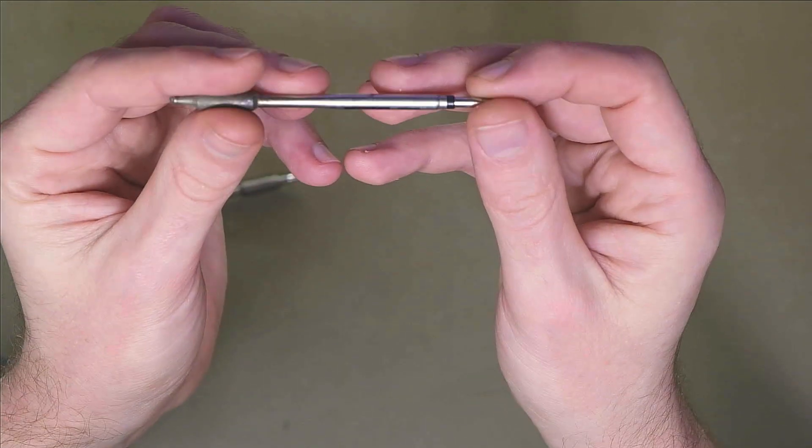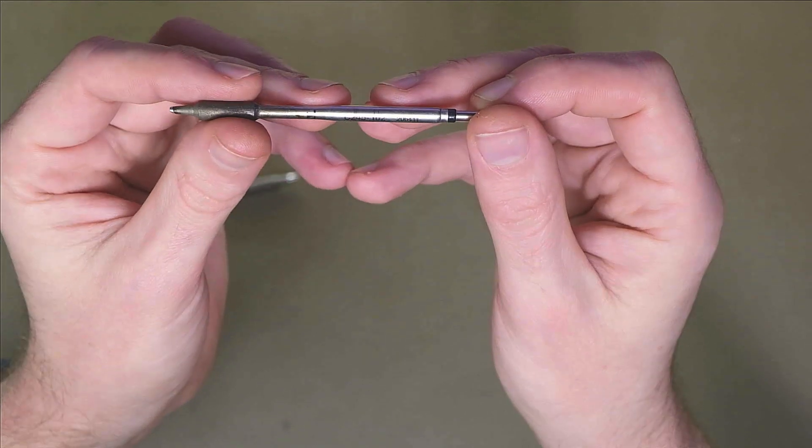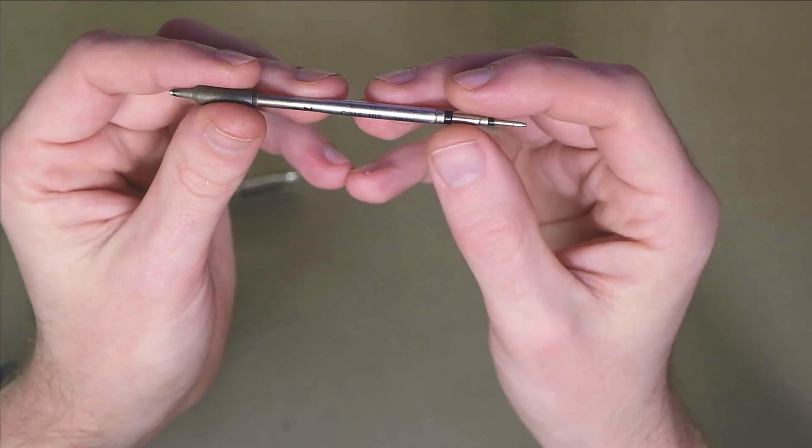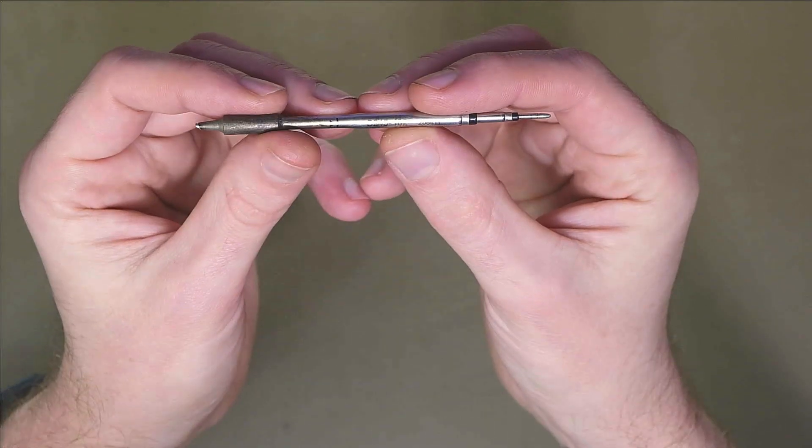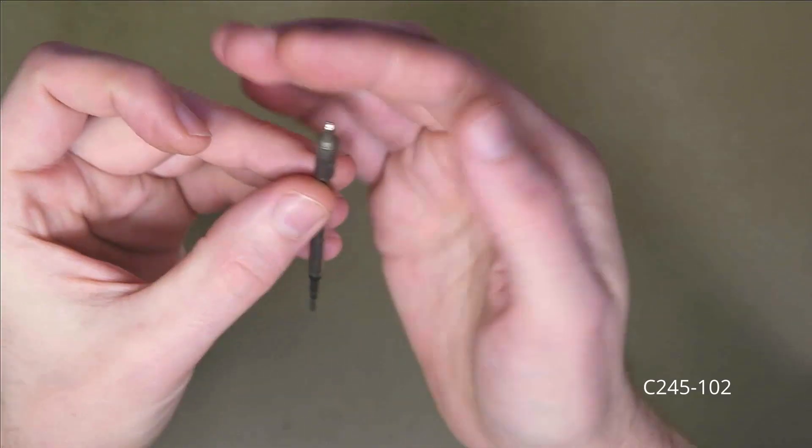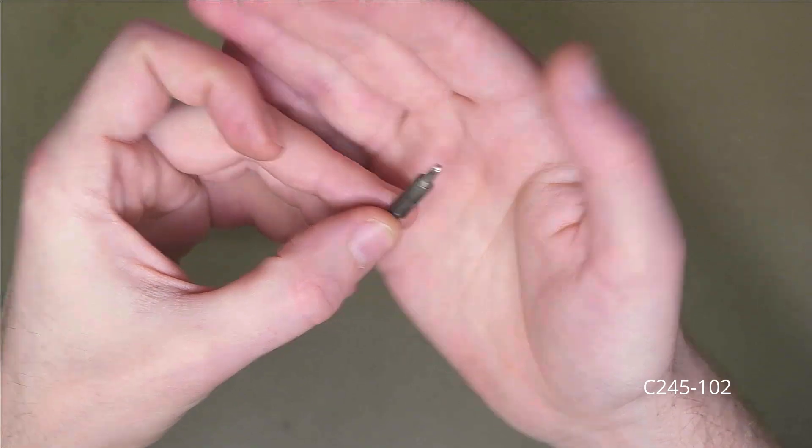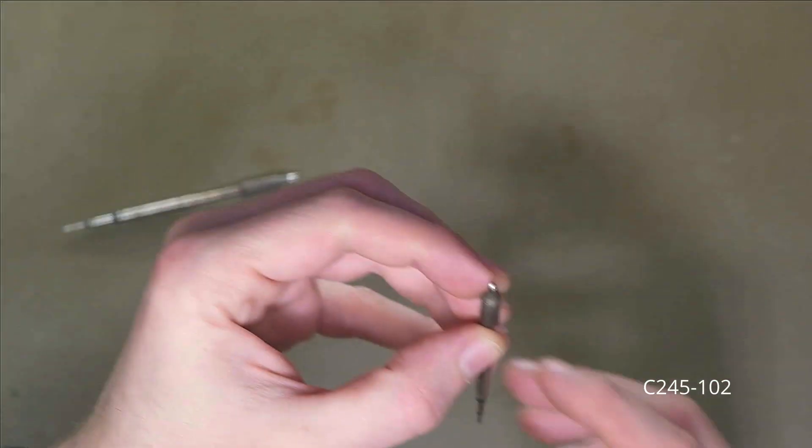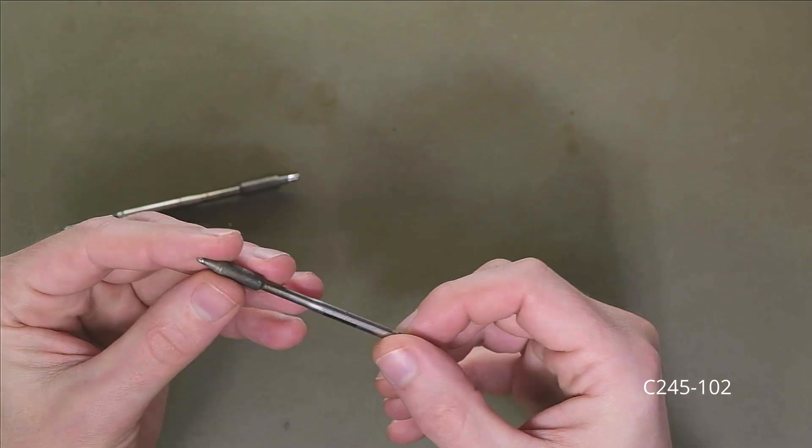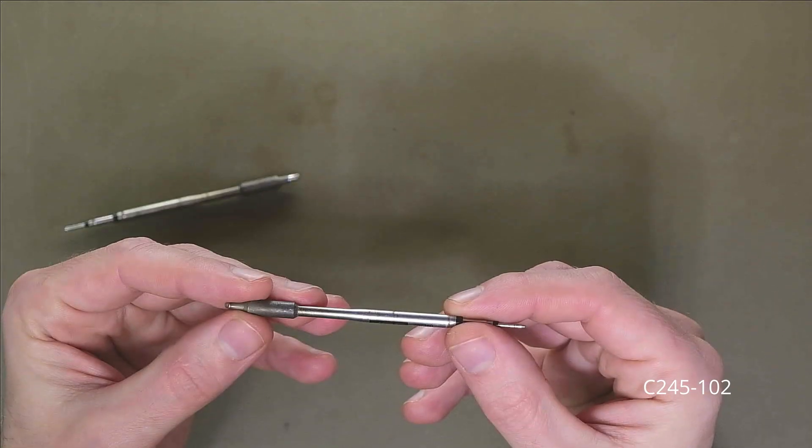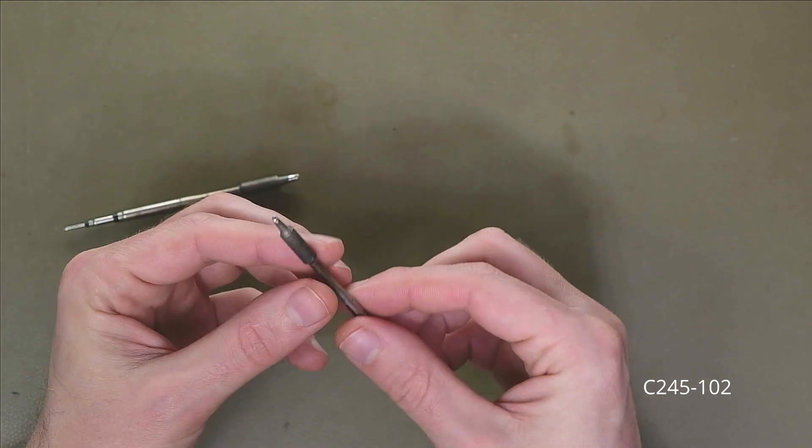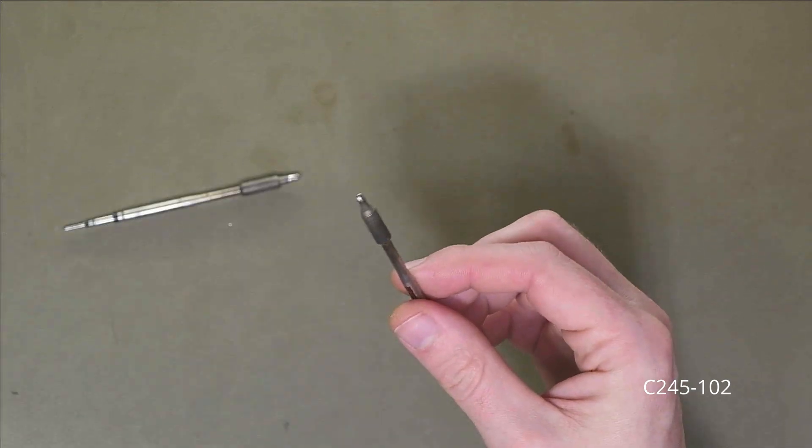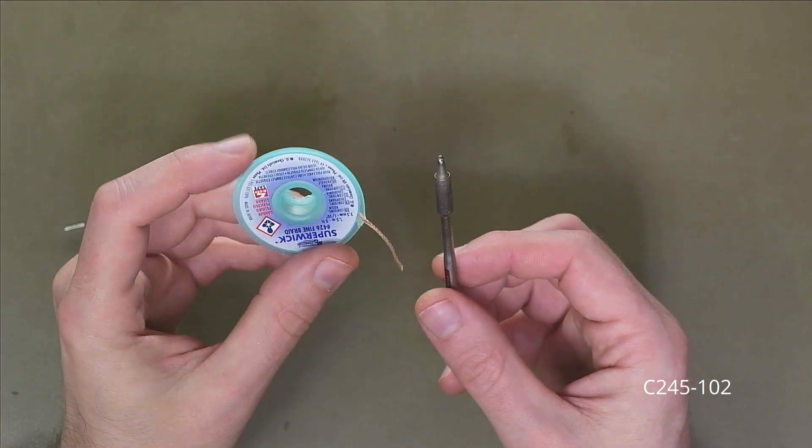The code is, well, they're all C245. That's the series of the tip. And this is the 102. It's a 2 millimeter diameter on the outside. I use this for rework, touching up, and also for production. And I use it a lot with the solder wick.